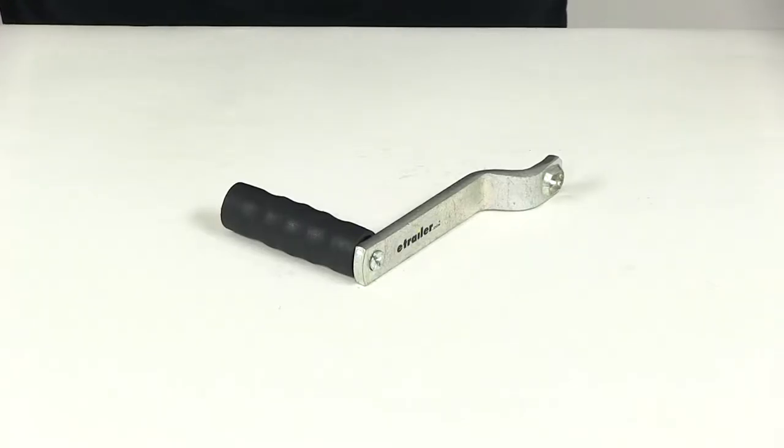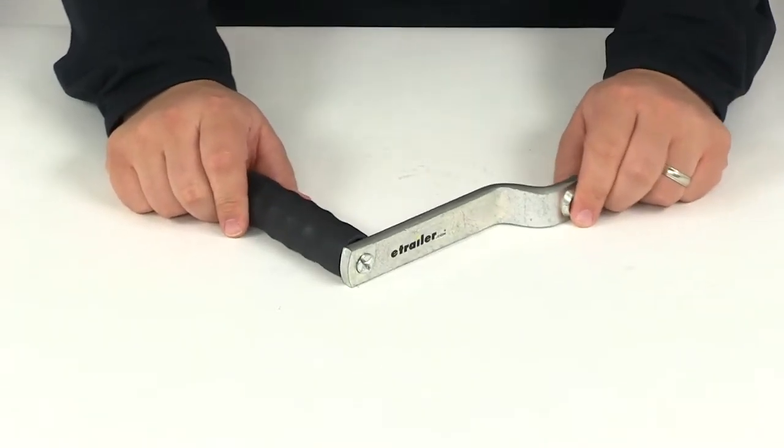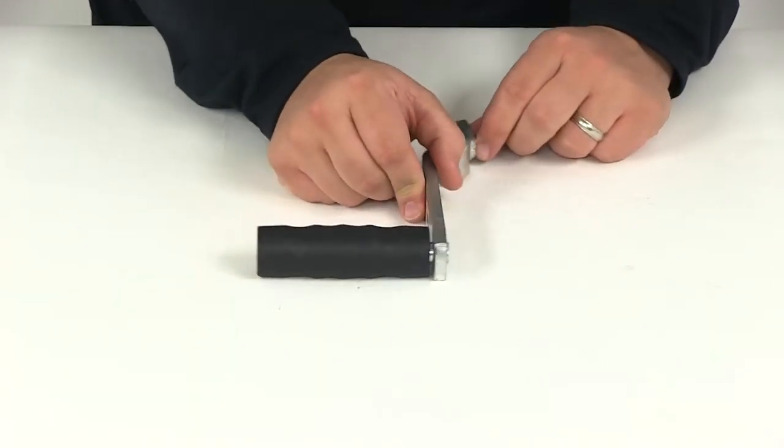Today we're going to be taking a look at part number DL5144639. This is the Dutton-Lanson replacement handle for the Dutton-Lanson winches.